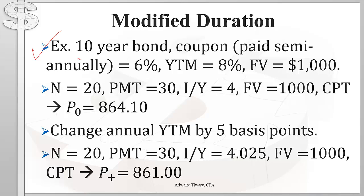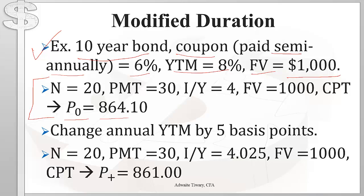Suppose there's a 10-year bond that makes coupon payments semi-annually at 6%, its yield is 8%, and its face value is $1,000. We plug these numbers into our financial calculator, making sure to express the terms in six-month periods, and we get the bond's price as $864.10.